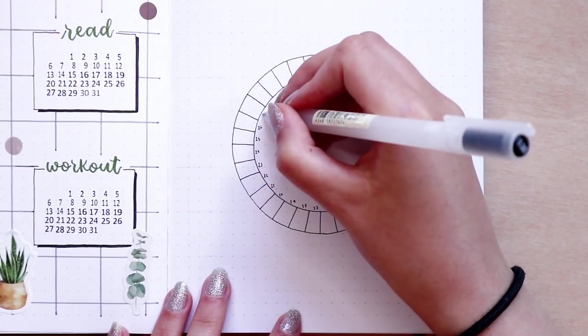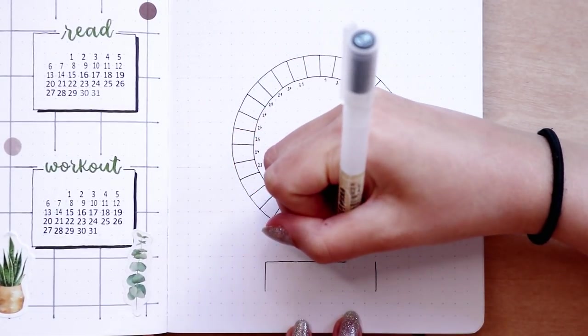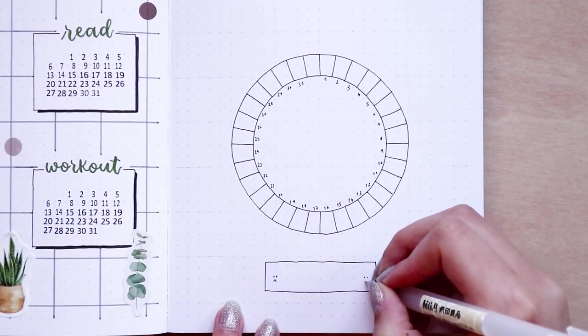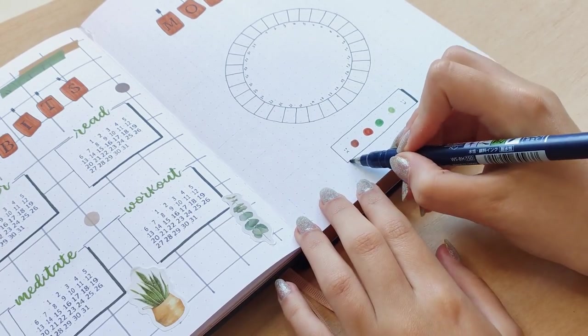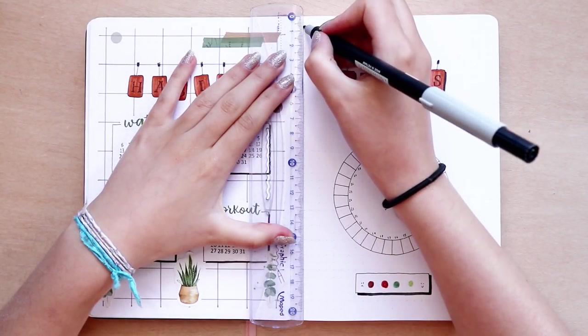The colors in order from left to right mean sad, tired, productive and happy. I finished up the pages with some stickers and the washi tape and of course the grid board.